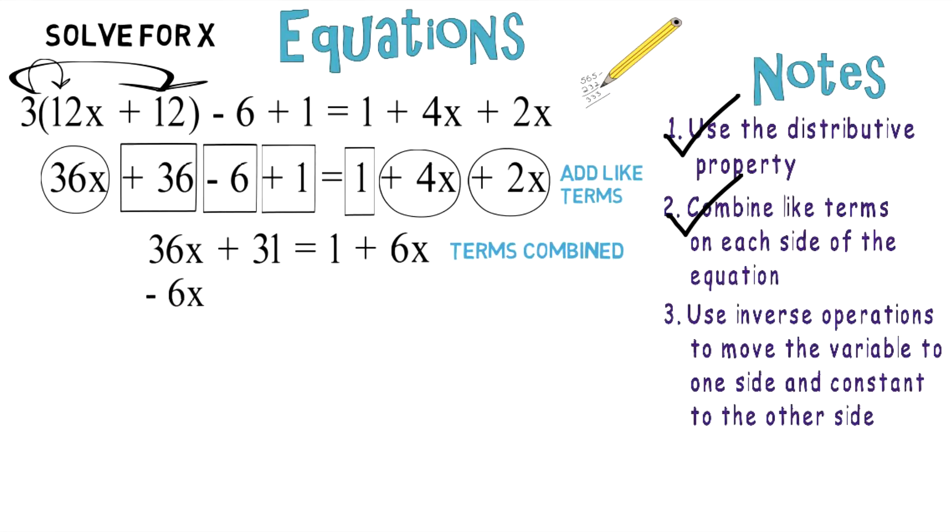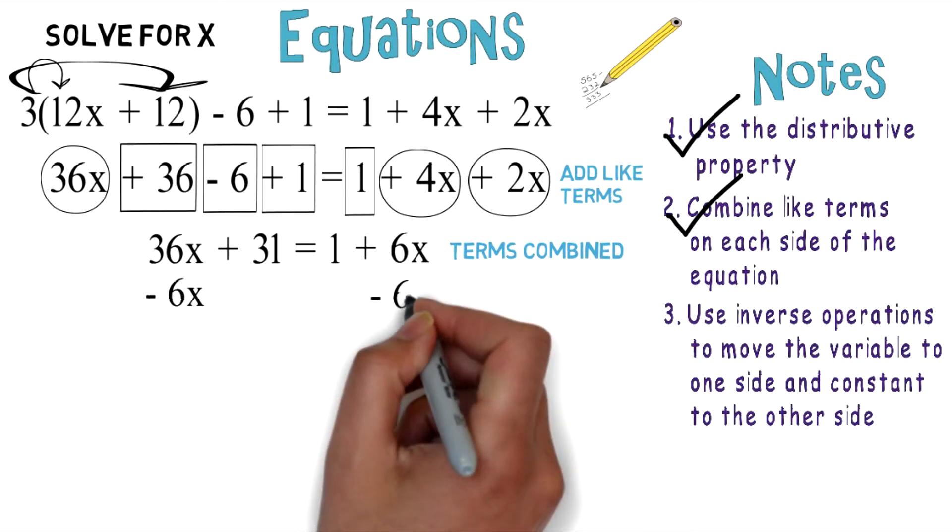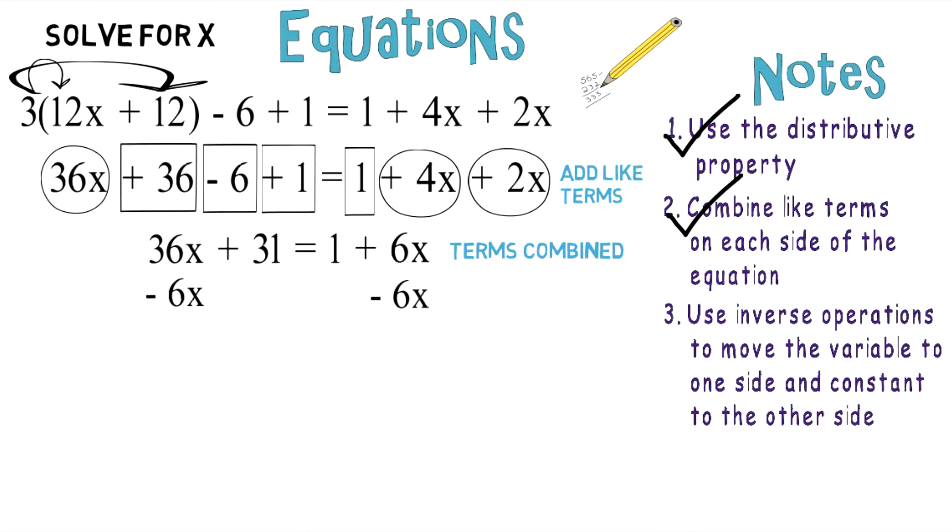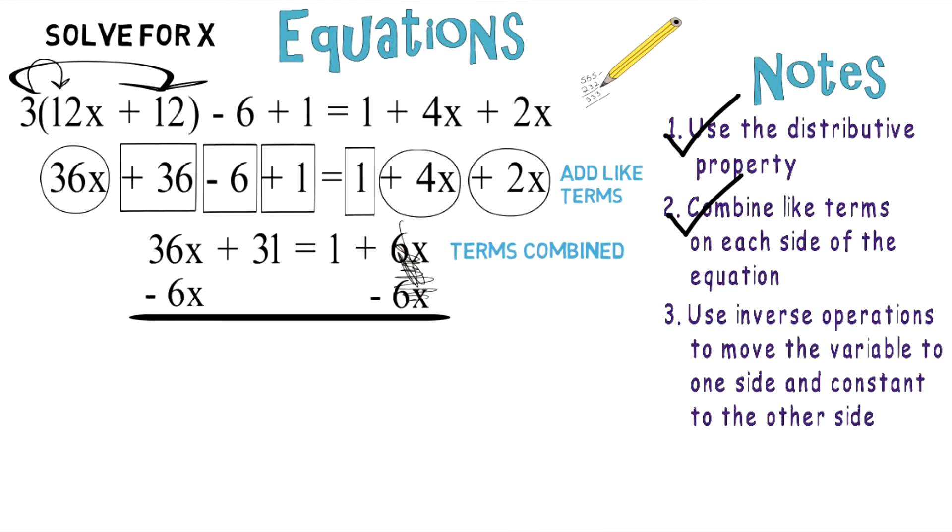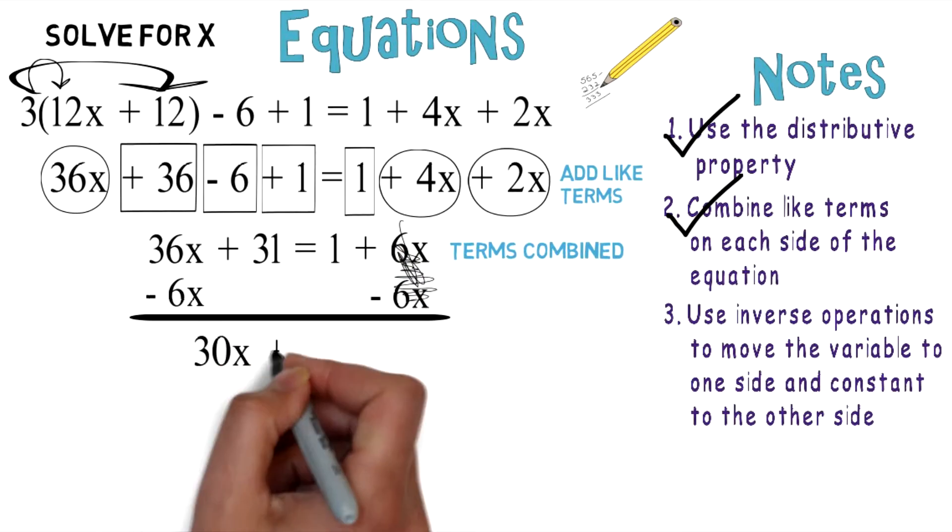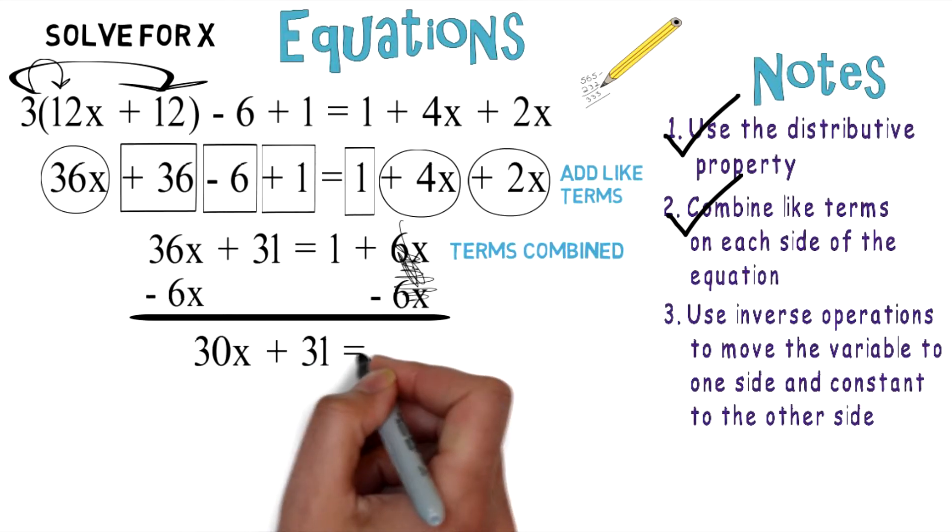We're going to subtract 6x from both sides. Whatever we do to one side, we have to do to the other. The positive 6x and negative 6x will cancel each other out, and you're left with 30x + 31 = 1.